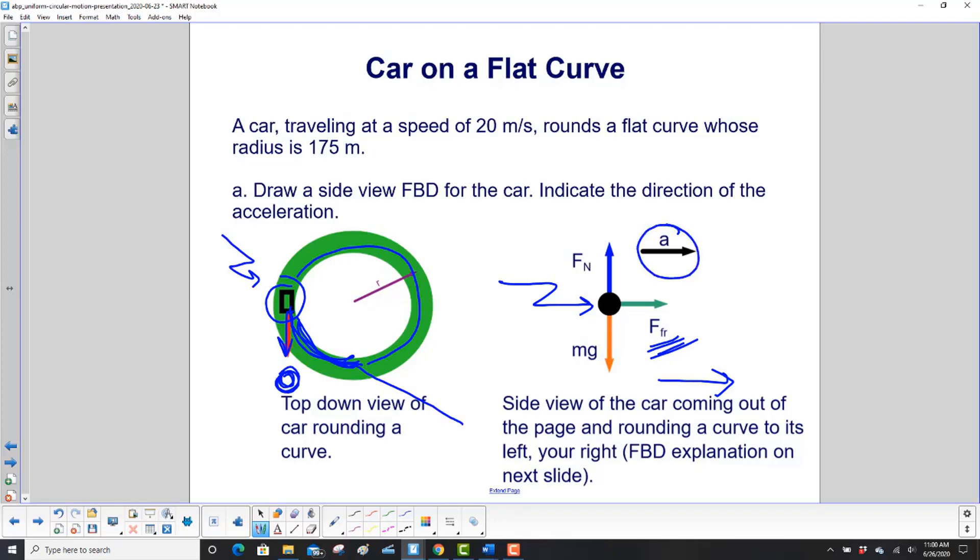You also have gravity pulling you down and then a normal force going in the up direction. So the ground's doing a couple things here. Ground pushes you straight up with a normal force, and it also has a friction force that pushes you to make you go in a circle.